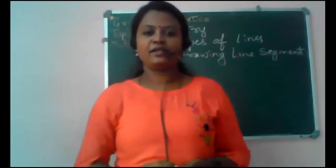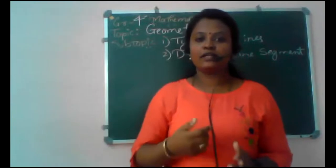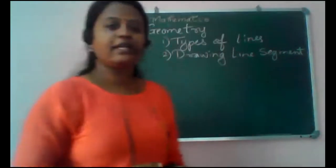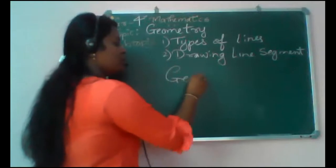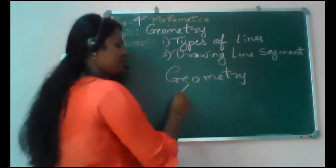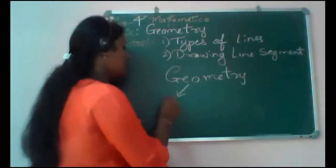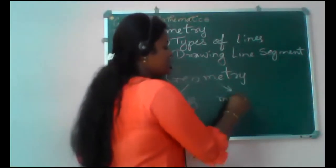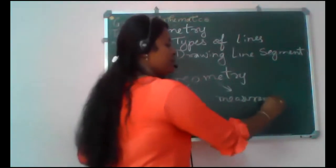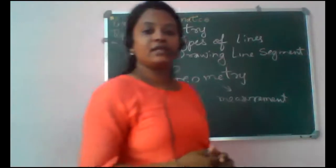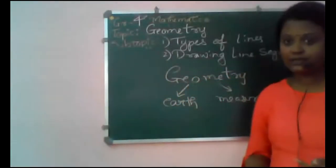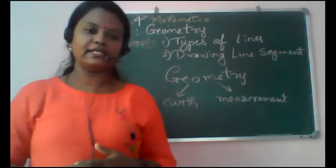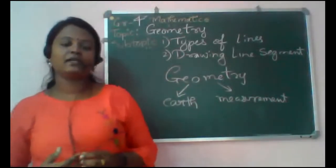Today we are going to learn a new topic: Geometry. Geometry is made up of two words — 'Geo,' related to Earth and the objects available on Earth, and 'Metry,' meaning measurement. So Geometry deals with objects around us whose length, volume, capacity, or physical quantity we can measure. Such figures all come under Geometry.